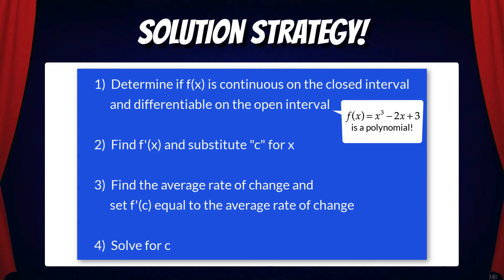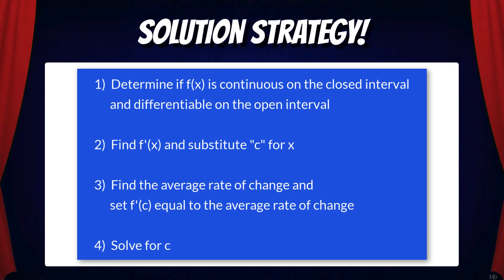Next, we're going to find f prime of x and substitute c for x. Then we'll find the average rate of change on the interval. Then we'll set f prime of c equal to that average rate of change, and finally we'll solve for c. Remember, c is the specific x value in question that we are looking for.